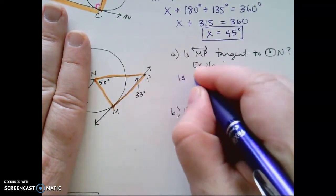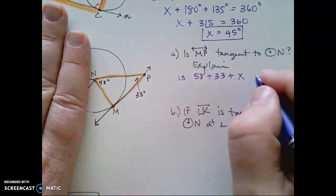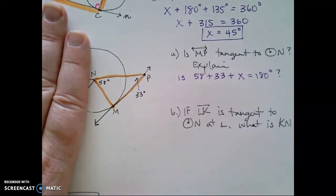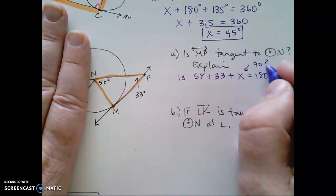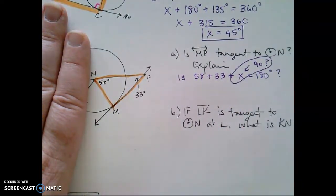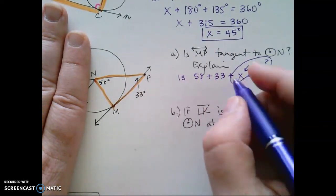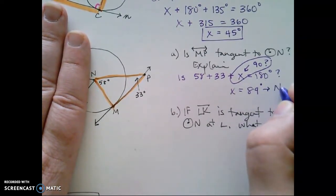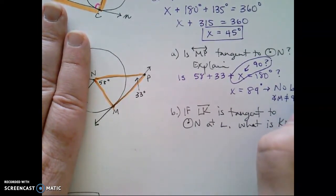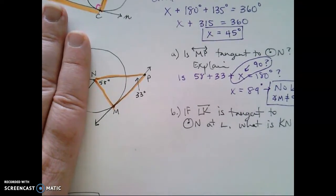So is 58 plus 33 plus my unknown angle at M equal to 180? This would have to be 90 in order for this to be true. So that's our big question. Is X equal to 90? Well, what we find is that if I add these together and subtract, the answer is no. X would be 89 degrees, not 90. So we're going to use that to say no, because angle M is not 90 degrees.